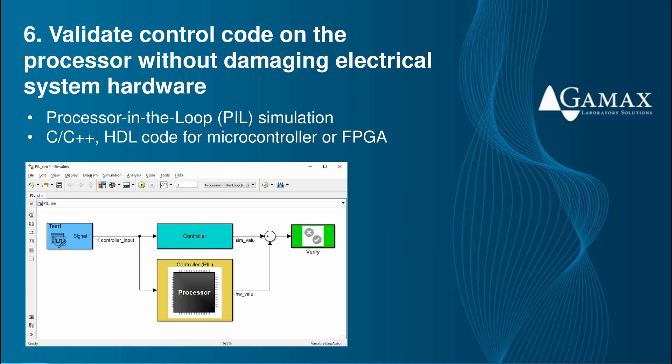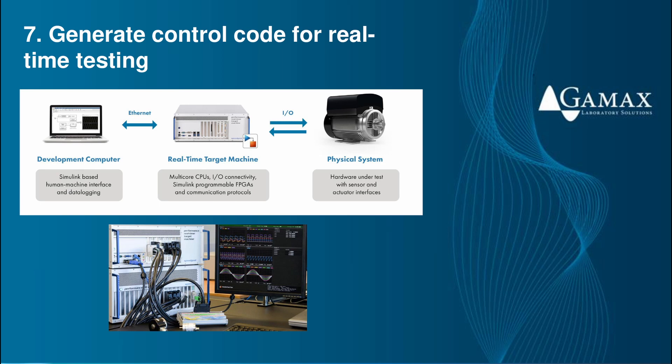Although processor-in-the-loop simulations are not executed in real time, they are bit-true, enabling us to verify our control code under a range of conditions and build confidence that it will execute properly once deployed on the real system. During hardware testing, making changes to controller code can be very time-consuming and risky. Manually modifying the code, recompiling it, and deploying it to the microcontroller or FPGA takes time — potentially a long time if we are a control algorithm developer who relies on a software or hardware engineer to make the changes. Depending on the extent of the changes required, we also risk introducing new problems into the implemented code.